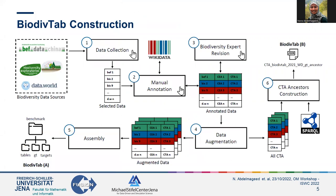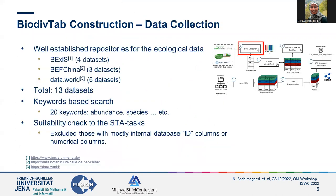BiodivTab has a six-stage construction pipeline. Starting with the data collection phase, we searched both GBIF, PIVChina, and DataWorld using 20 keywords like species and abundance. These three data repositories are well-established for ecological data. We manually checked if the downloaded tables suit the semantic table annotation tasks, and excluded datasets that contain mostly internal IDs or numerical fields without further context. At the end of this stage, we selected 13 datasets to be annotated.